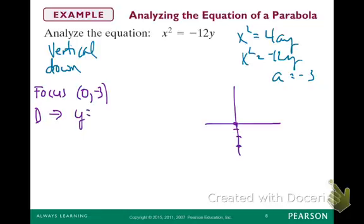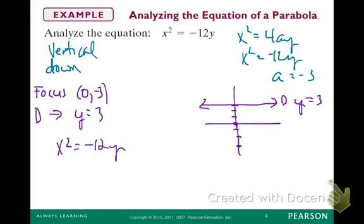At y equals positive 3. Good. So you can draw that on in. So there's your directrix at y equals 3. So we want to graph it. So now we're going to take that x squared equal to negative 12y. We want to find those two points on that latus rectum. What is our y value on that line? It's not 3.